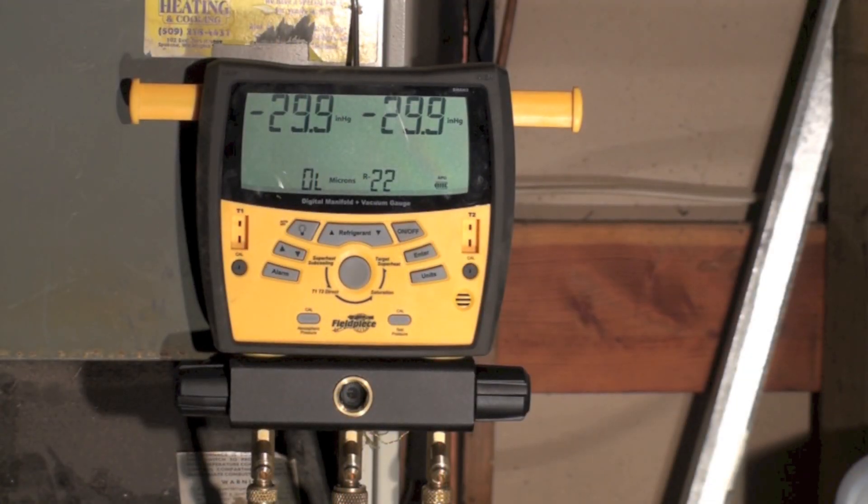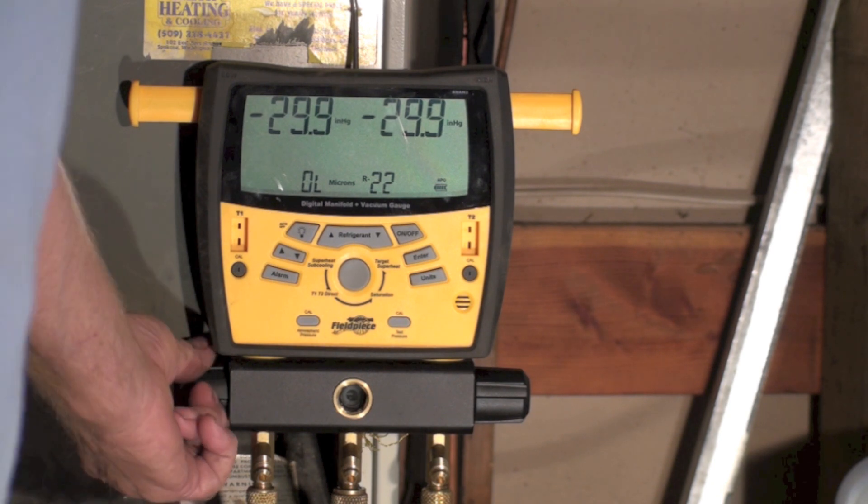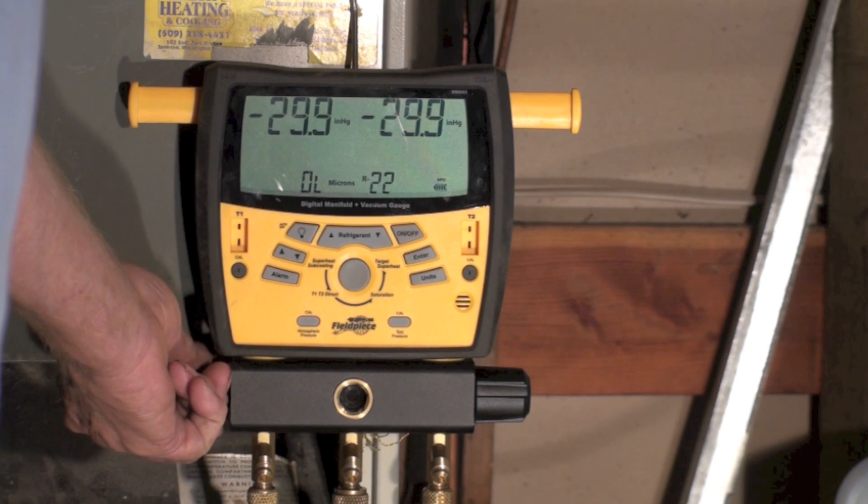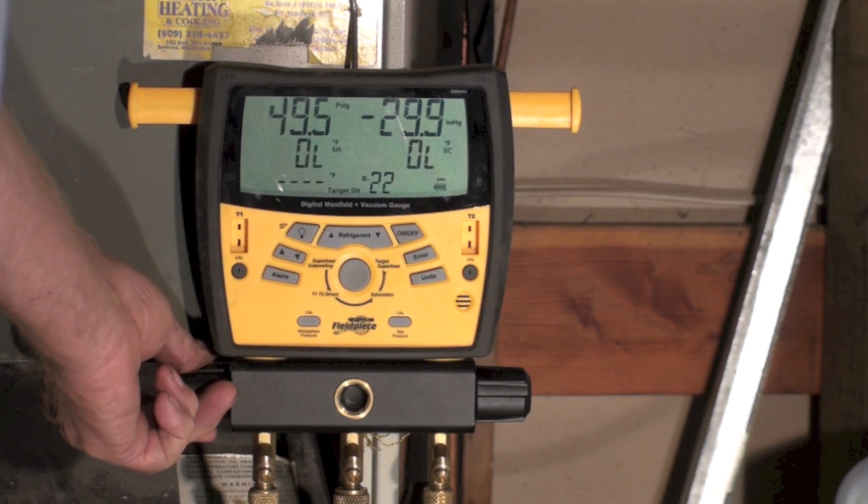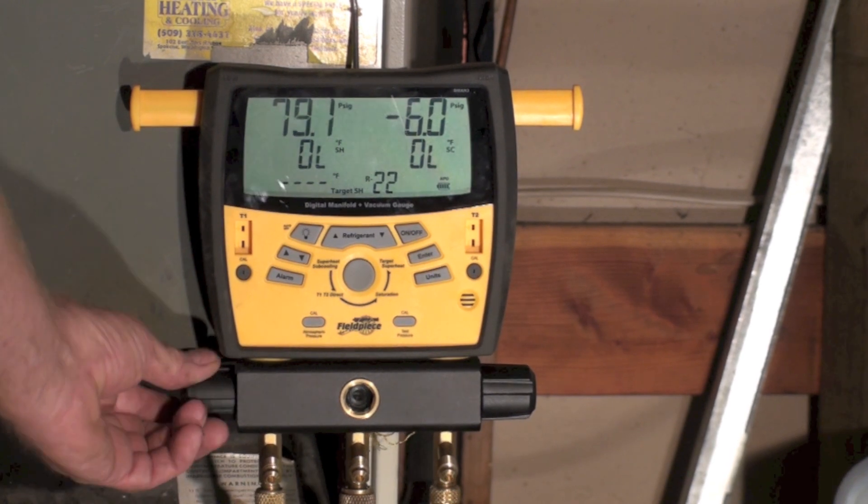So now what I'm going to be looking for is a positive pressure in the system, depending on the size of the system, 5 to 10 pounds PSIG. So I'm going to go ahead and open up the low side of this. You can open both sides if you wish. It really doesn't make too much difference.